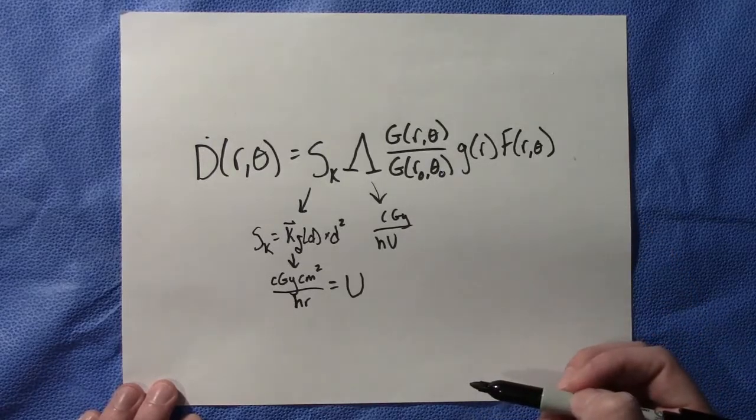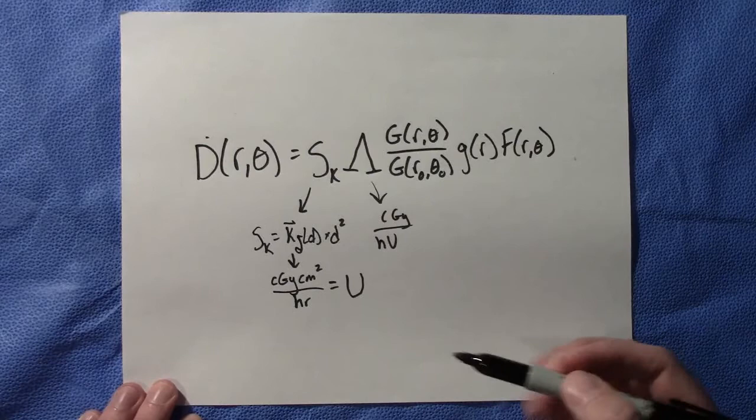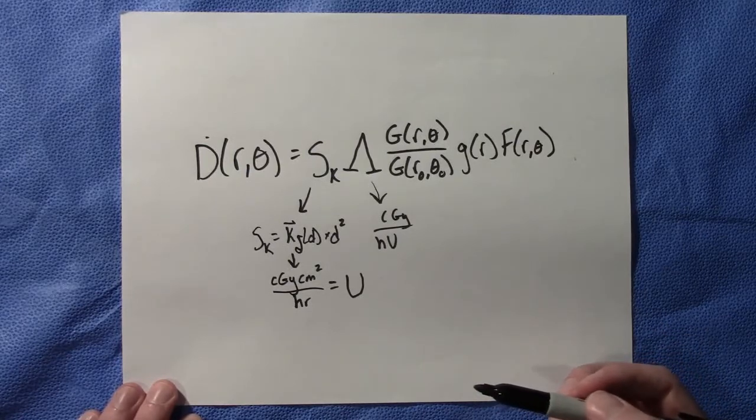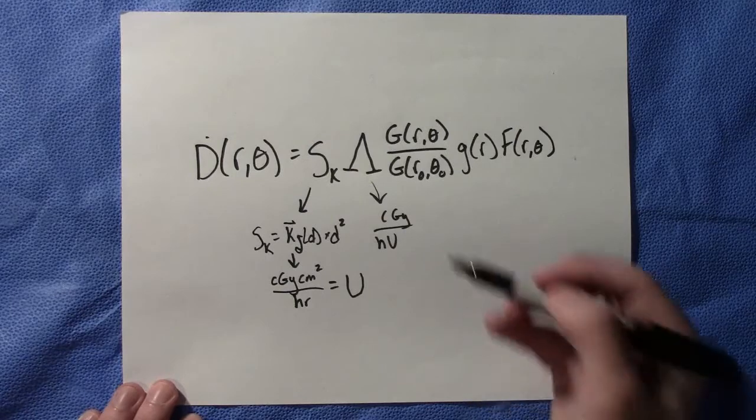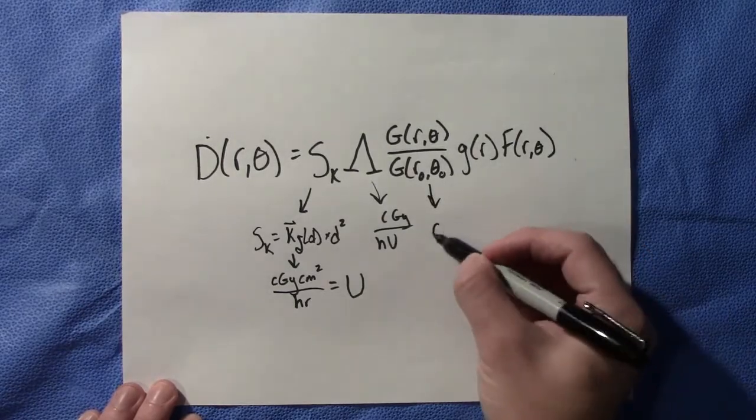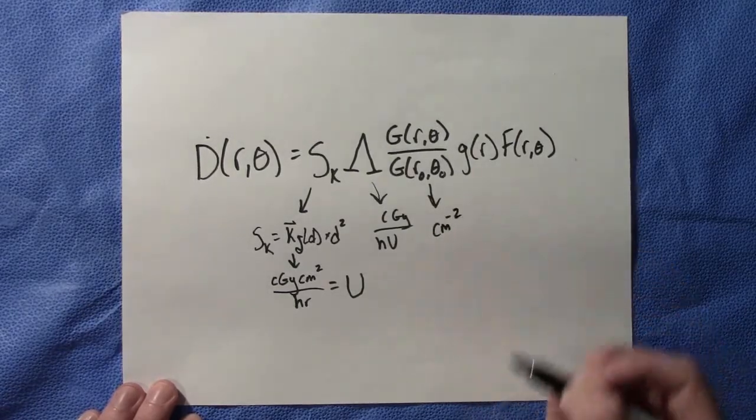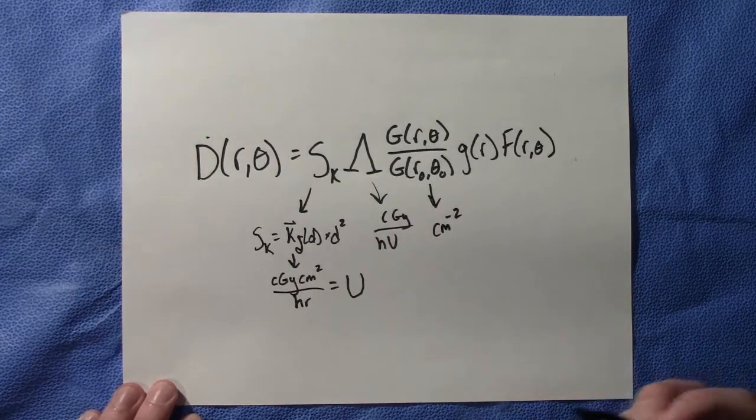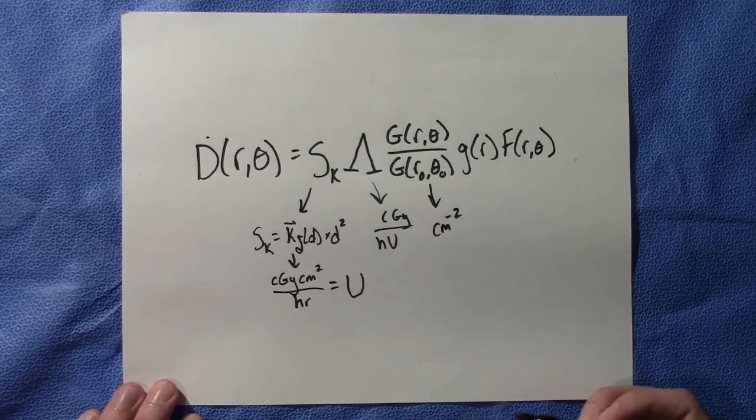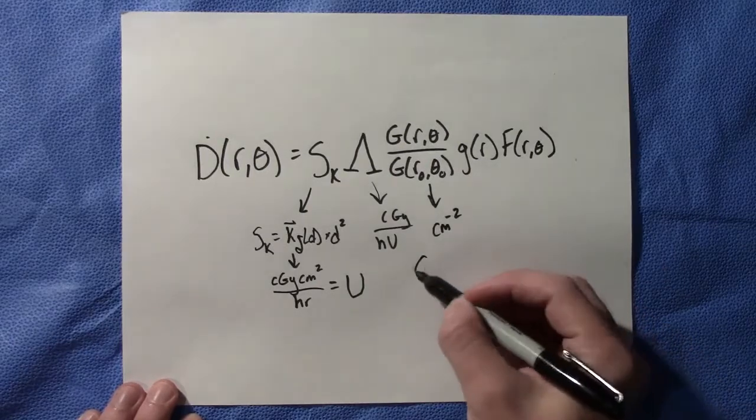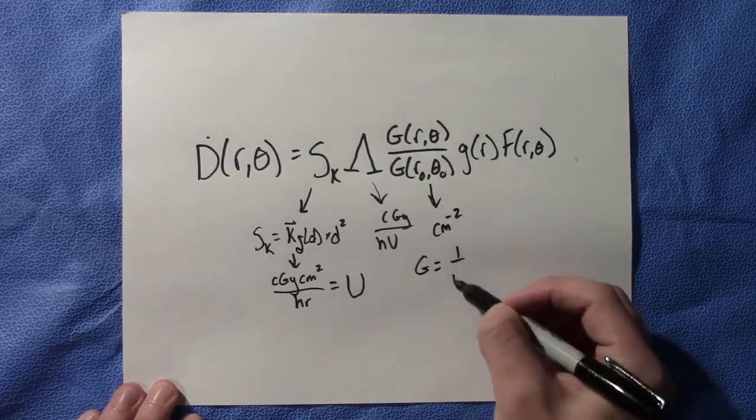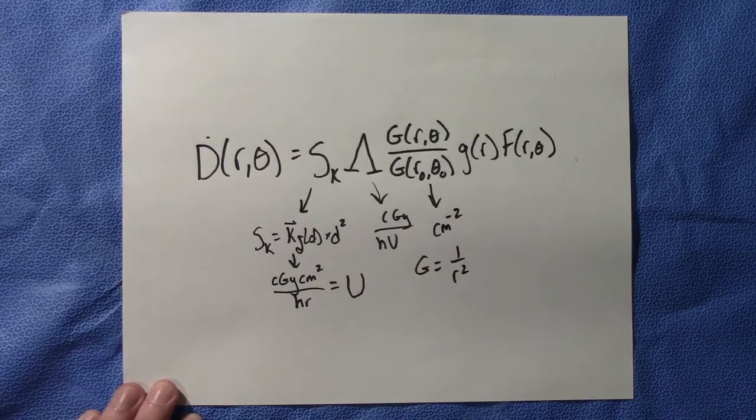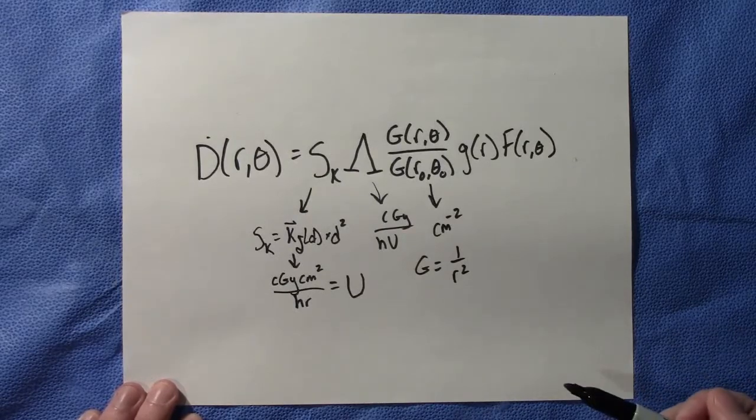Next we have the geometry factor. This accounts for geometric fall off of photon fluence with distance. So essentially inverse square law. The units here are simply centimeters to the negative two. And that depends on the distribution of the radioactive material. For a point source, the geometry factor would just be equal to one over R squared. And as I mentioned, it generalizes the inverse square correction.